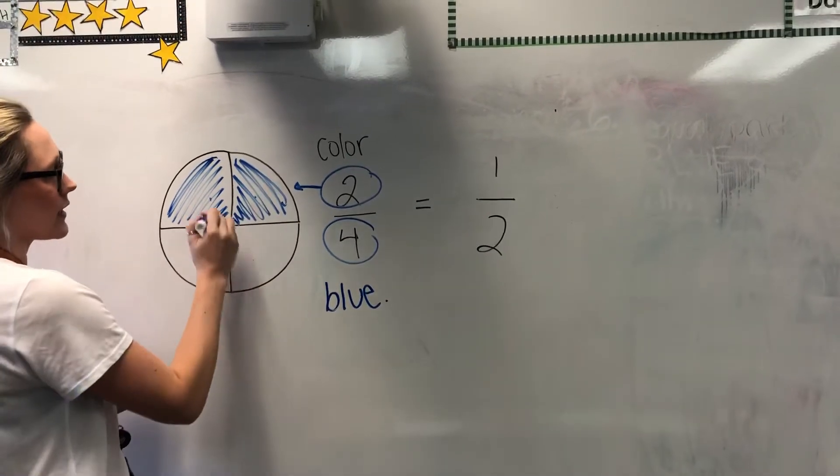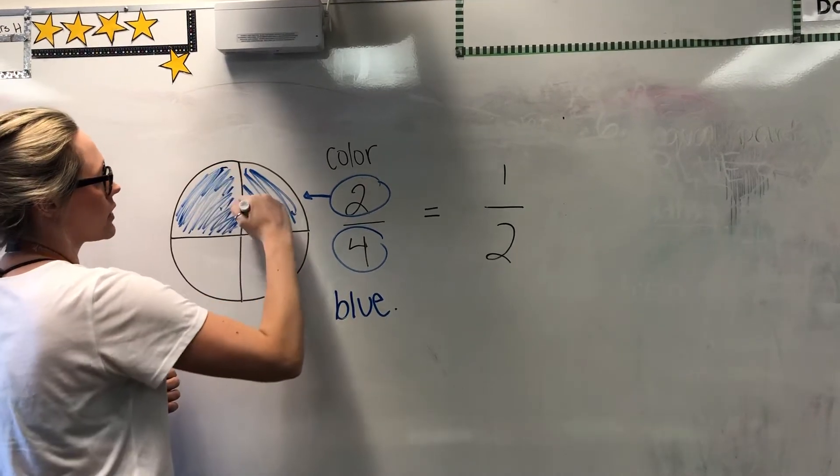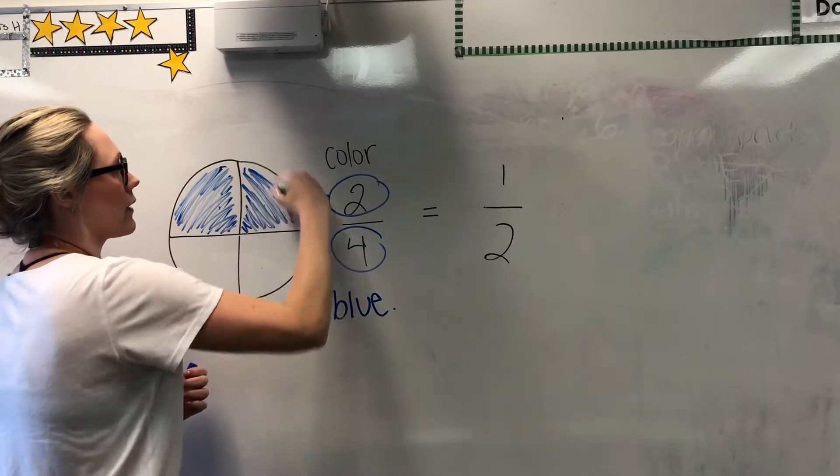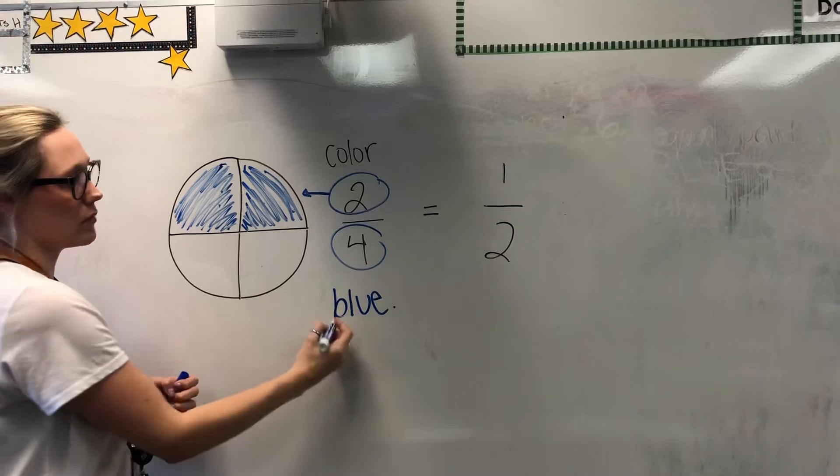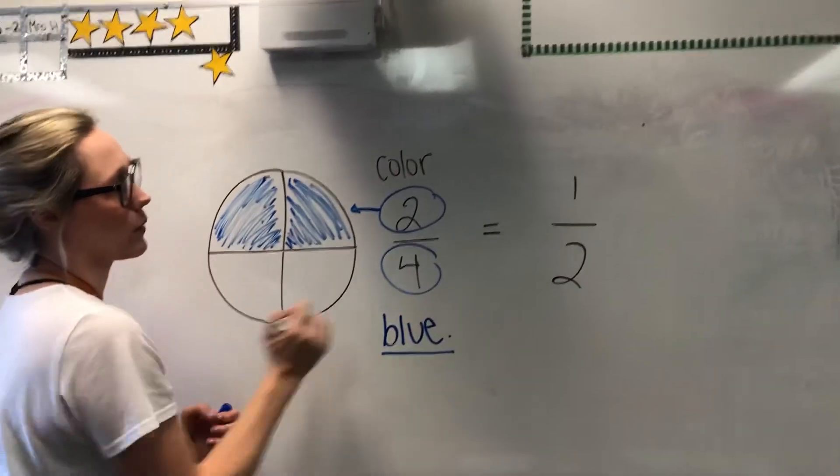So it's asking us to color half of our circle, which we're going to do, and we colored half of our circle blue. So we colored two of the four parts.